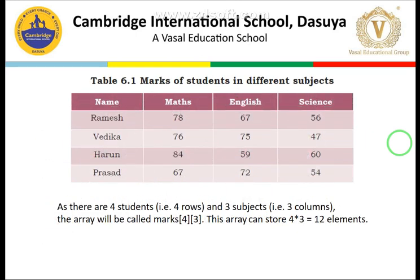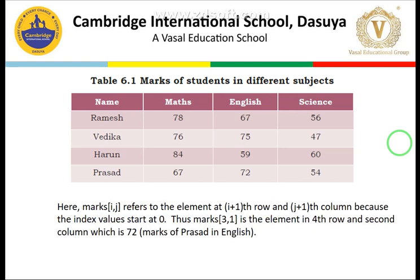Here is the example we have taken: there are 4 students represented by 4 rows, and 3 subjects represented by 3 columns. This array is named 'marks'. It has 4 rows and 3 columns — that's why it is written as a 4 by 3 matrix. This array can store 4 × 3 = 12 elements. If we want to access the element 72 — the marks scored by Prasad in English — we say marks[3][1], because the 4th row is accessed by index 3 (index starts from 0), and the 2nd column is accessed by index 1. So marks[3][1] accesses the element 72, which is Prasad's marks in English.